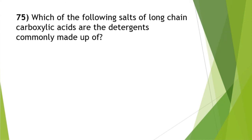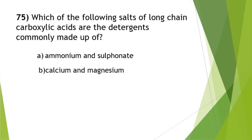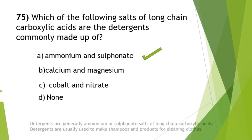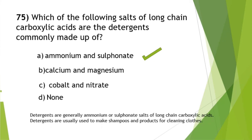Which salts of long-chain carboxylic acids are detergents commonly made of? The answer is option A — ammonium and sulfonate. Detergents are generally ammonium or sulfonate salts of long-chain carboxylic acids, and are usually used to make shampoos and products for cleaning clothes. This is the last question of this video — thank you for watching, see you in the next video.